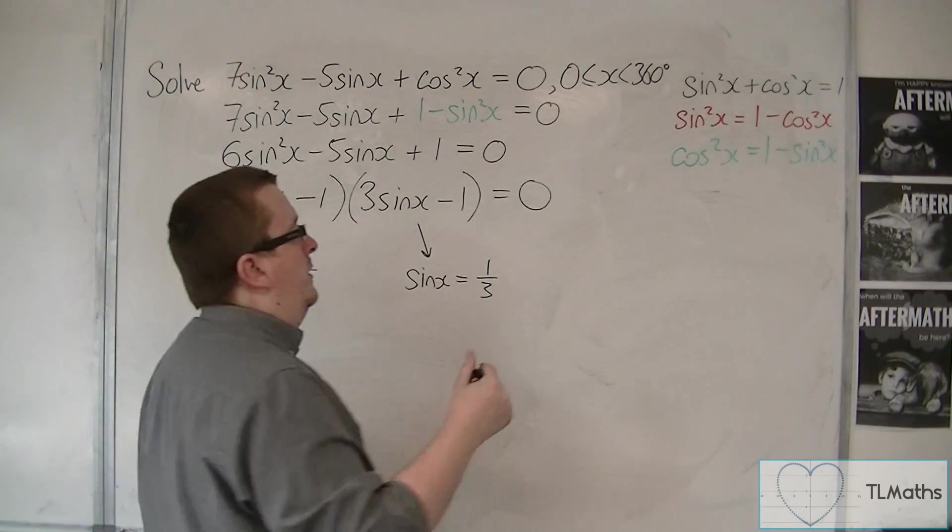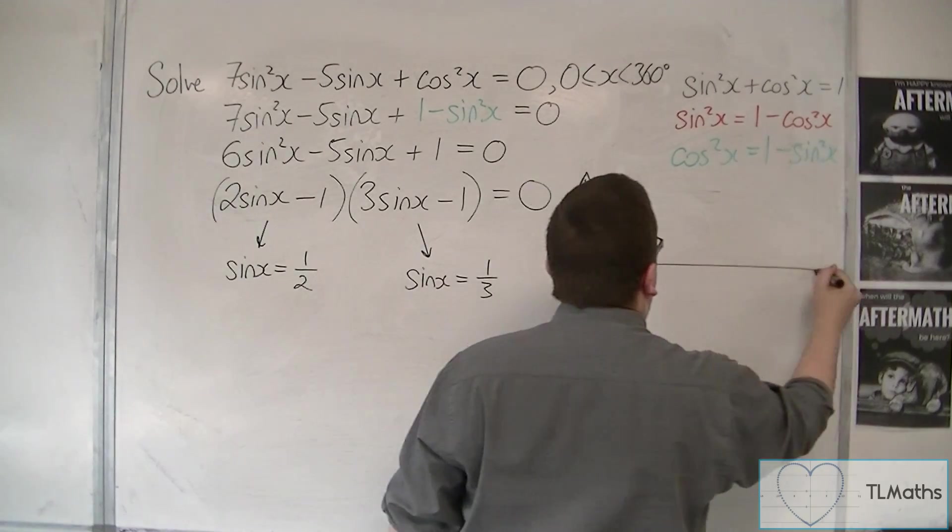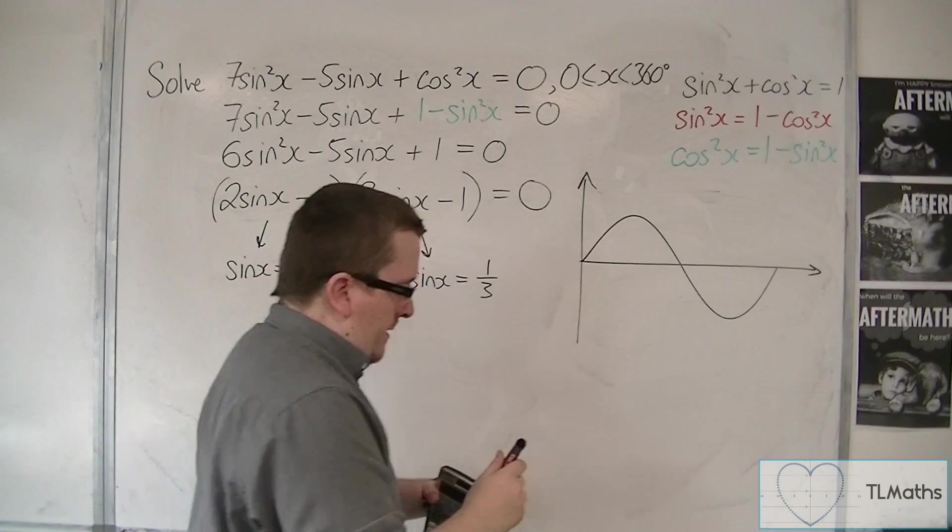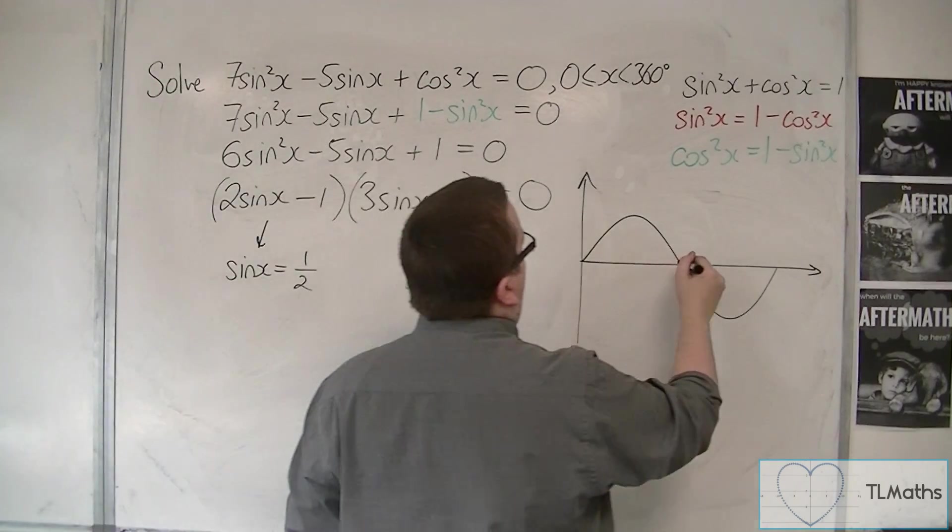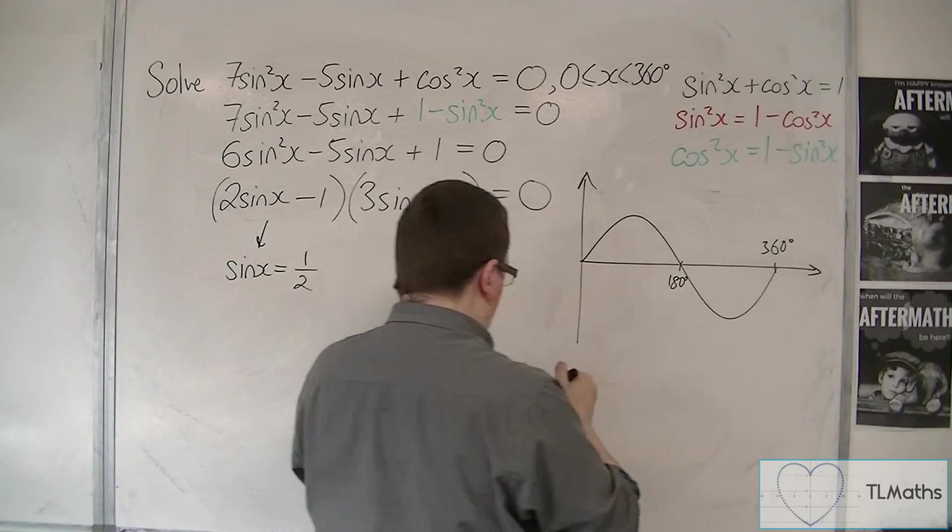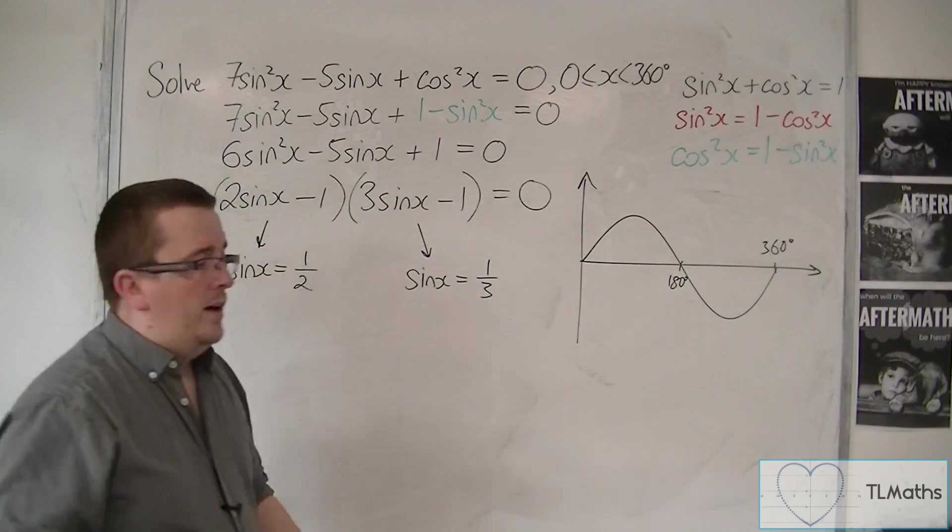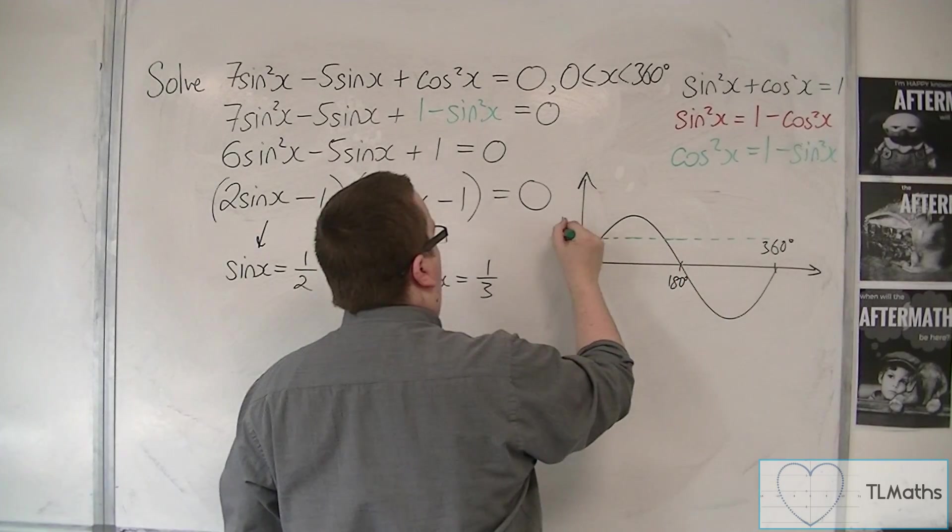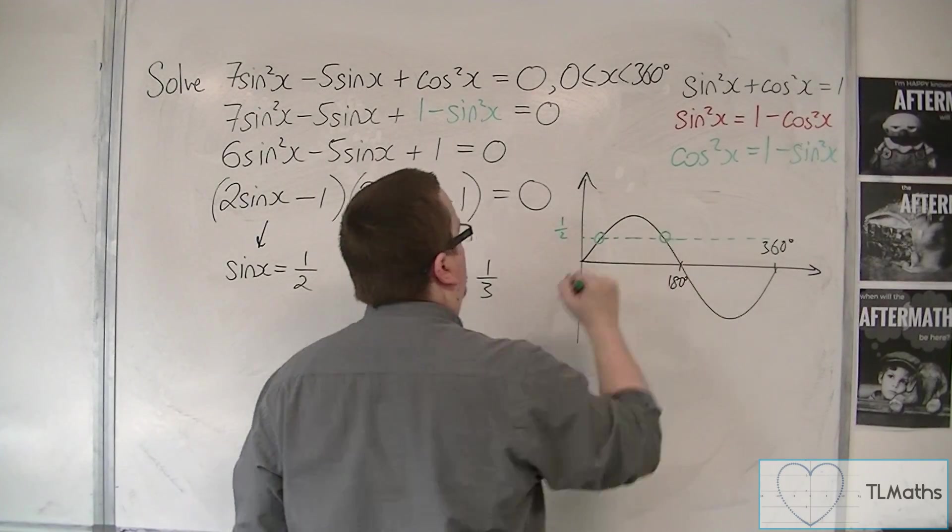So let's sketch sine x between 0 and 360. Sine x equals 1/2 - there is 1/2, and so there are the two solutions.